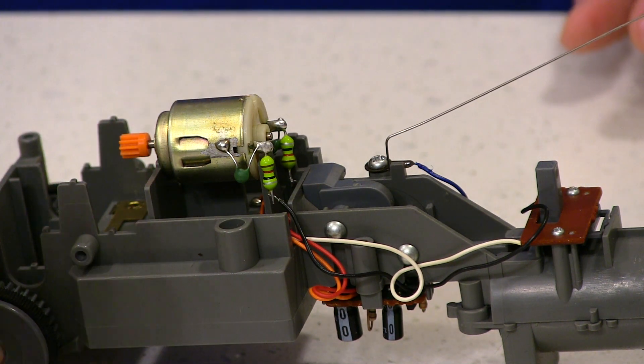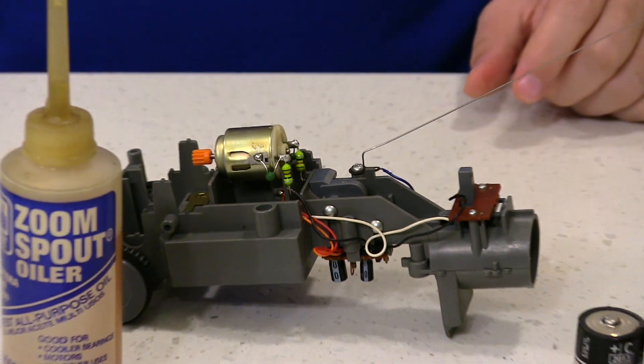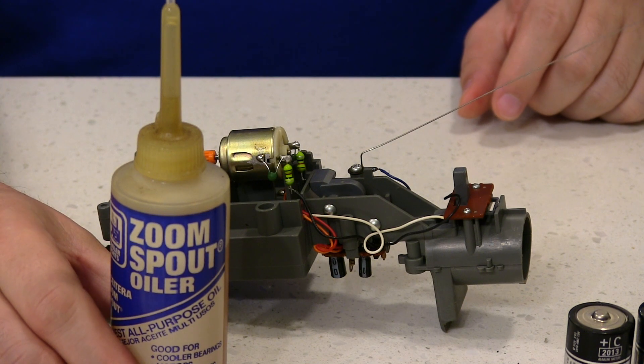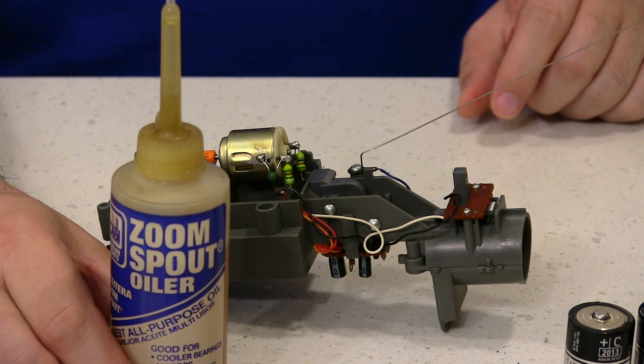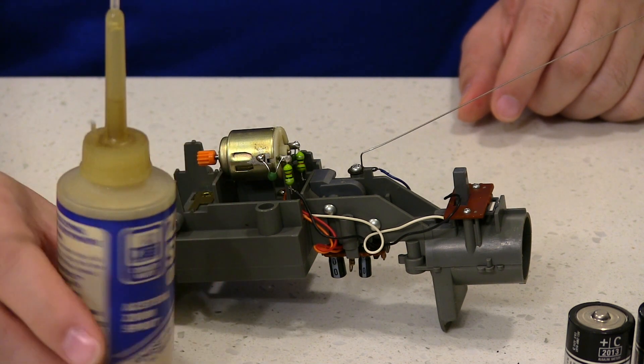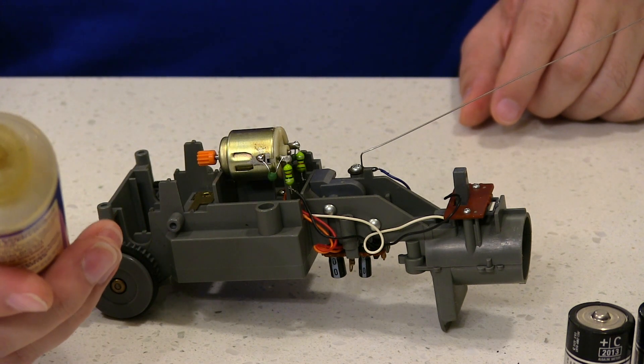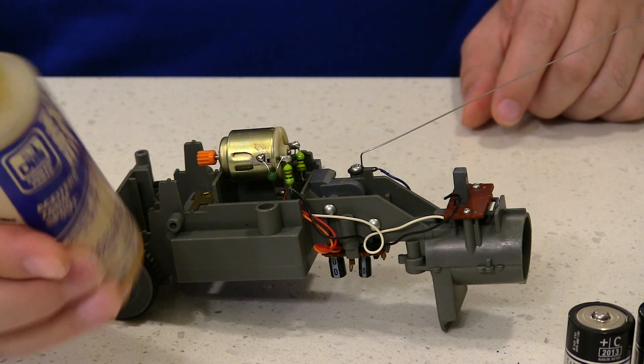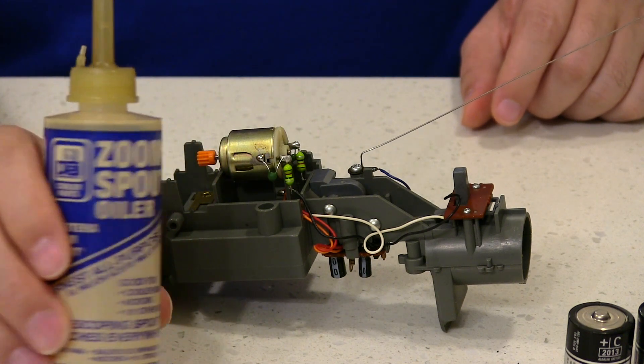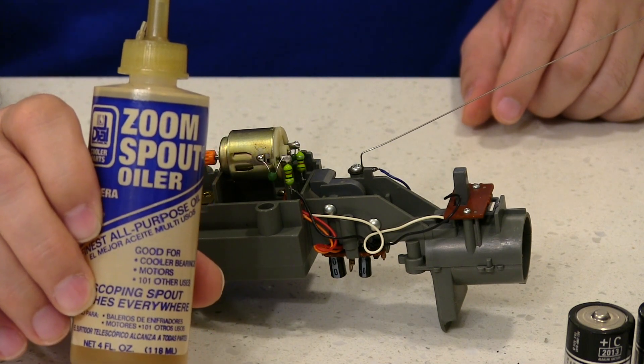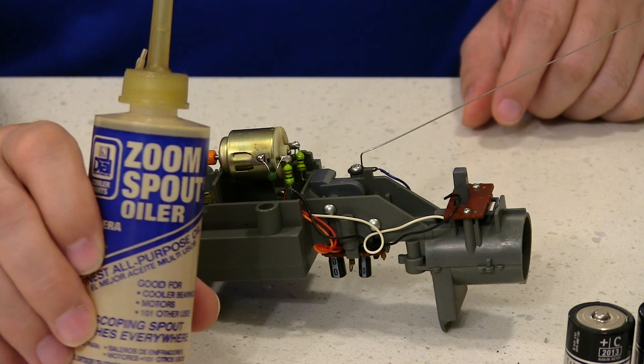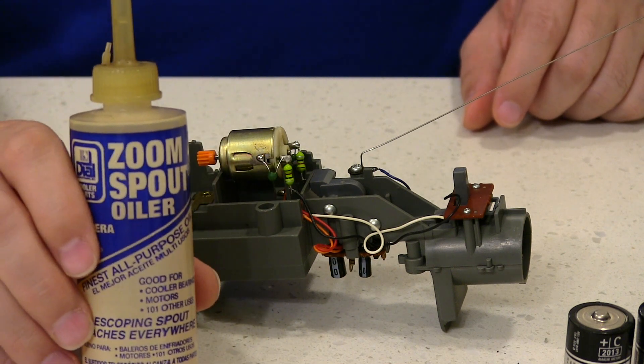So I like to use this stuff here. It's called Zoom Spout Oil. It's made for air conditioning compressors and stuff like that. At least that's what I was under the impression of. But it's good for all kinds of bearings and motors, and I use it on radios and record players that I repair. And pretty much anything that needs a sewing machine type oil or a three-in-one type oil, but this stuff is better because it doesn't get all gummy.